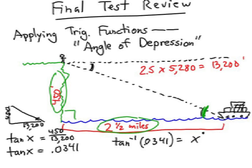So, on your calculator, put in the value 0.0341, find the inverse tangent function, and it will give you the answer. The unknown angle of depression, which is also the angle of elevation from the ship, is going to be about 2 degrees.